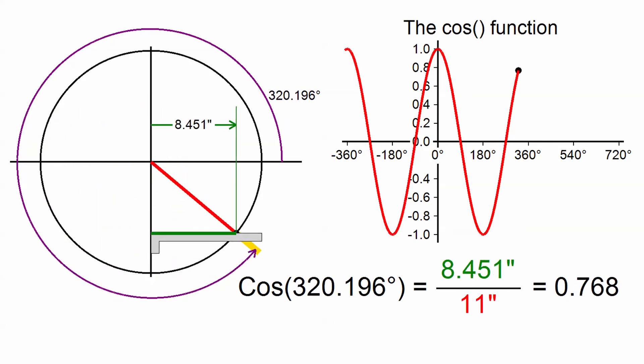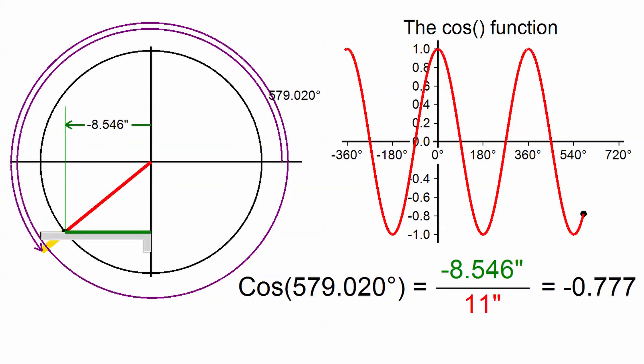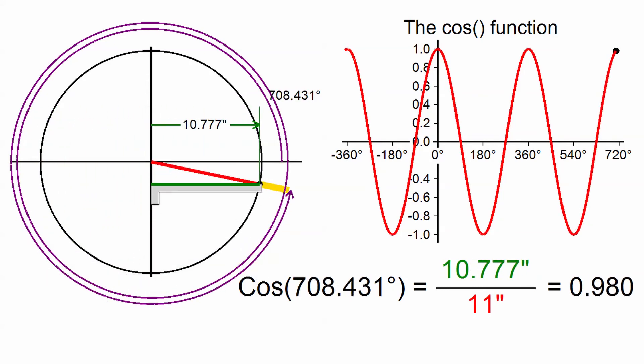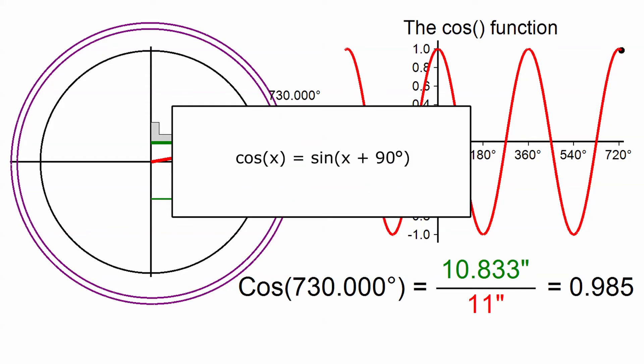It's apparent that the cosine is very similar to the sine. In fact, the cosine function is exactly the same as the sine function, but shifted 90 degrees to the left. This means that the value of cosine for any arbitrary angle X is equal to the value of sine at that angle plus 90 degrees.